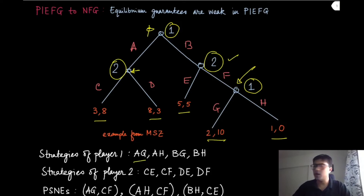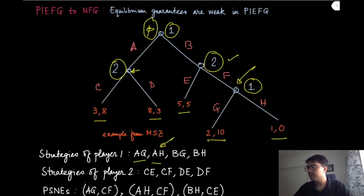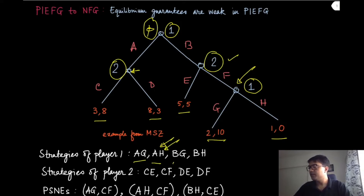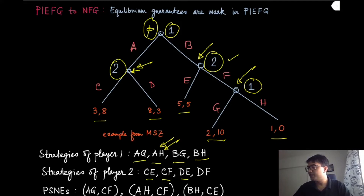The strategy of player one could be written as AG, AH — this means that at the first history where it is a player it is choosing action A, and when the second occasion arises where that player is again playing it picks action H. Similarly, BG and BH for player one. Similarly, player two can play either at this node or at this node at these two non-terminal histories, so it can be CE, CF, DE, and DF.